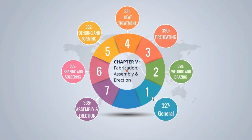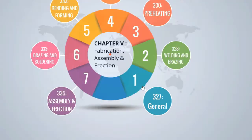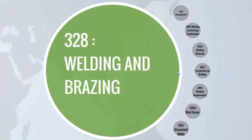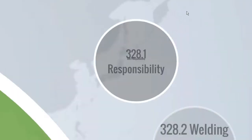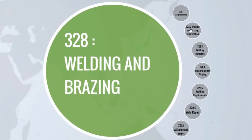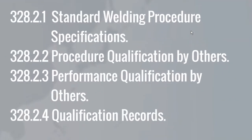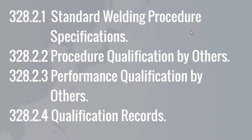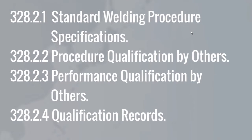Currently there isn't any para as para 329 and para 334. Now coming back to para 328, titled Welding and Brazing, which is further subdivided into seven subparagraphs. Subparagraph 328.2 provides the requirements of welding and brazing qualification by following prepared and qualified welding and brazing procedure specifications and production welding.